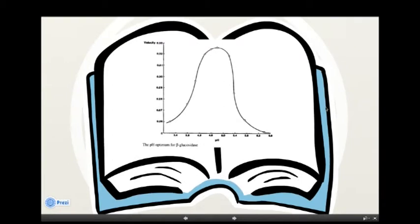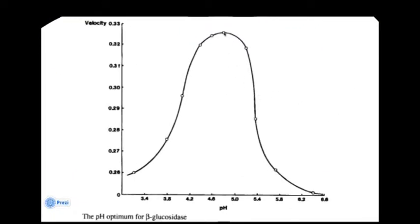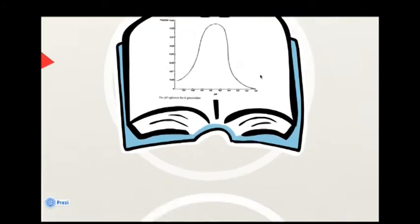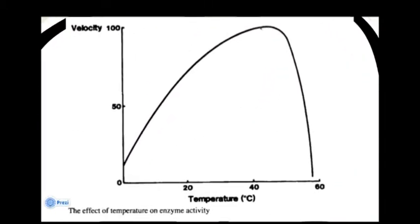This graph shows the pH optimum condition for beta-glucosidase. Above or below this optimum pH, the velocity will decline. For temperature, the same phenomenon happens. Above or below this optimum temperature, velocity also declines.